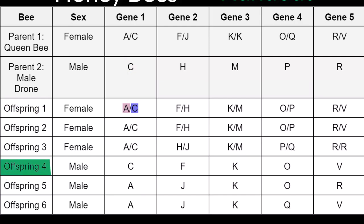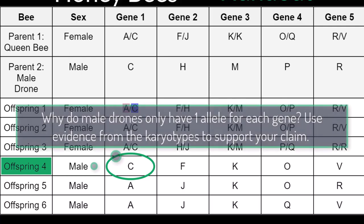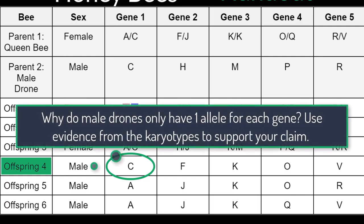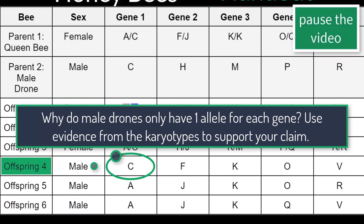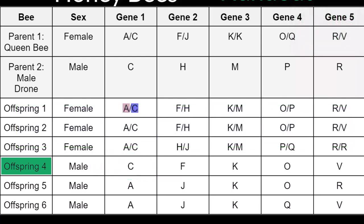Let's look at another example together. Offspring number 4, a male drone, has the C allele for gene number 1. Why do male drones only have one allele for each gene? Use evidence from the karyotypes to support your claim. Looking at the parent's alleles, both parent 1 and parent 2 have the C allele. Therefore, it is impossible to tell for sure which parent offspring number 4 inherited the C allele from. I'm going to color code the C allele green to represent the fact that this allele could have been inherited from the bee's mother or father, as we do not have enough information to tell.